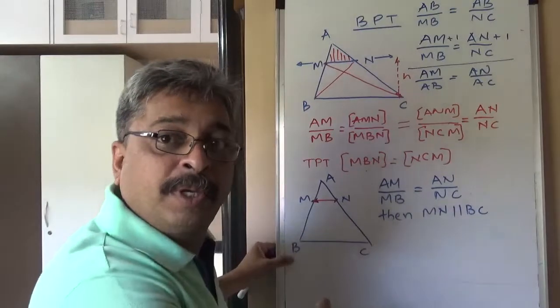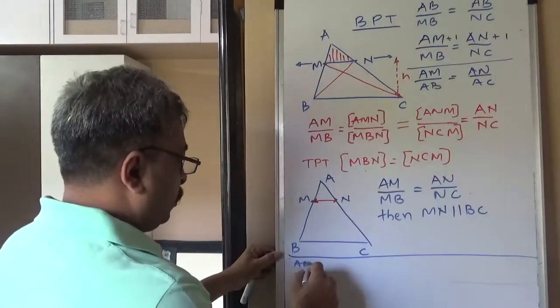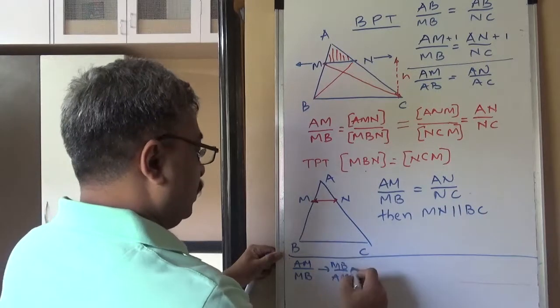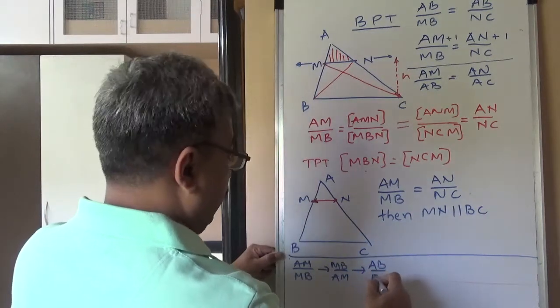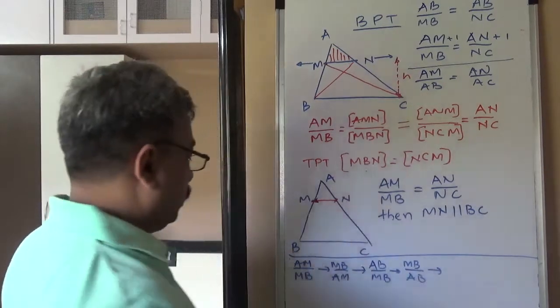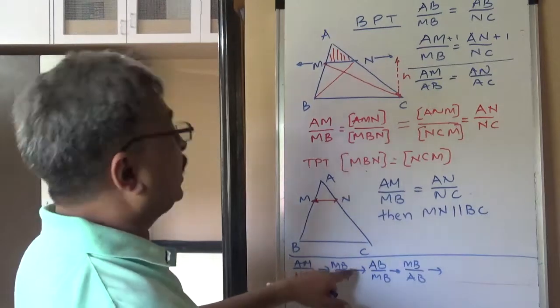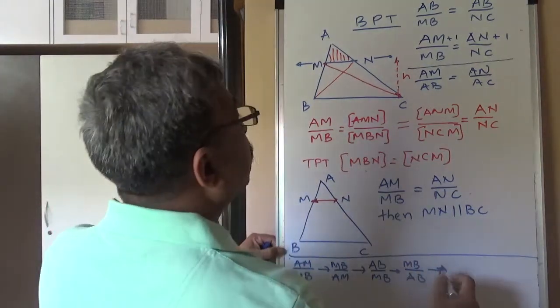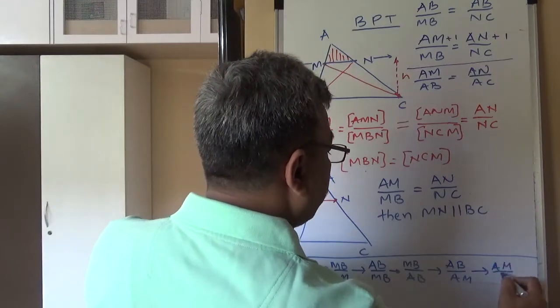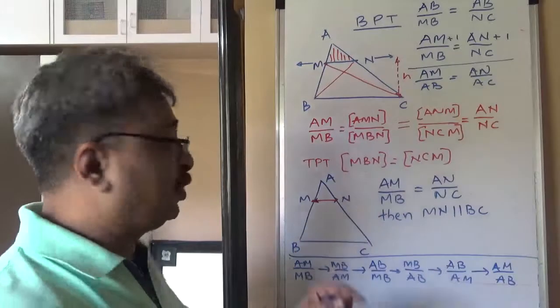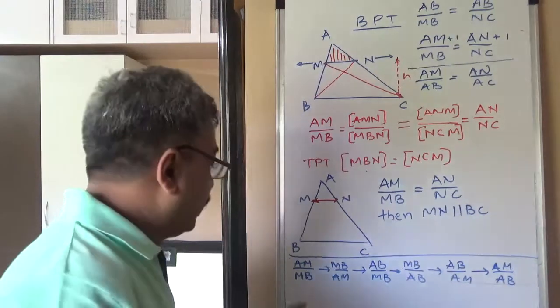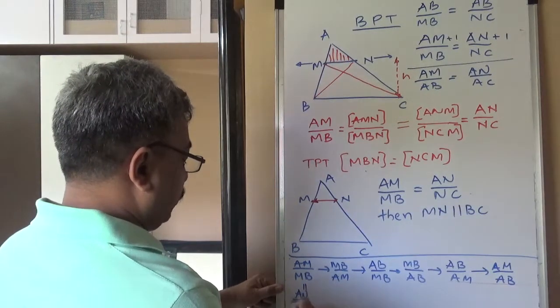Let us list them. First ratio is AM upon MB. Suppose AM upon MB. This can produce, of course, MB upon AM. This can produce by adding 1, we have produced AB upon MB. Reciprocal of this will be MB upon AB. Now, again, I can take first reciprocal and then add 1, MB plus AM, numerator will become AB. AB upon AM, I can produce. Similarly, I can produce AM upon AB.